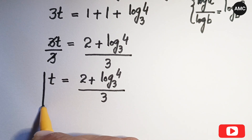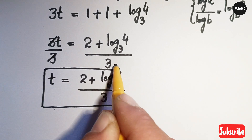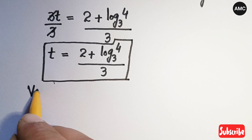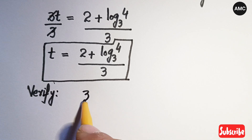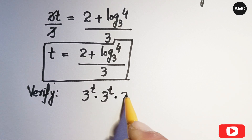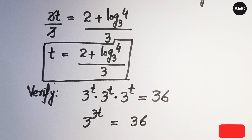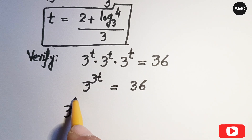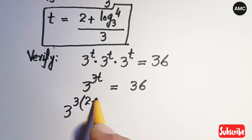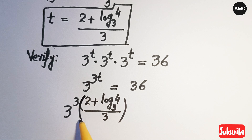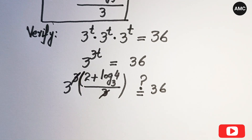Now we will verify our result. Recalling the original problem: 3 to the power t times 3 to the power t times 3 to the power t equals 36, which simplifies to 3 to the power 3t equals 36. Substituting our value of t, we get 3 to the power 3 times (2 plus log base 3 of 4, all over 3) equals 36. The 3s cancel, leaving 3 to the power 2 plus log base 3 of 4.